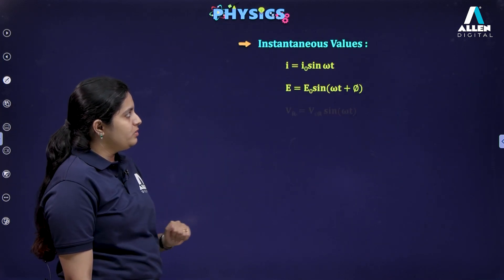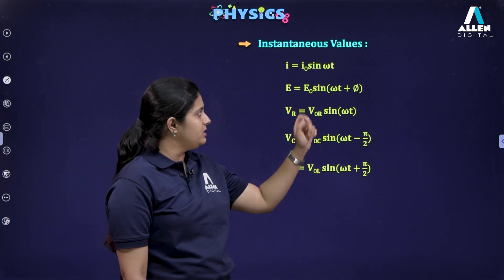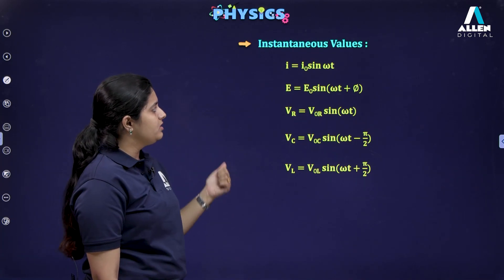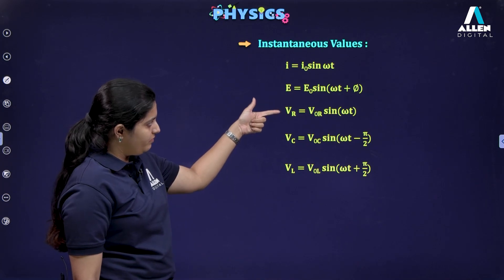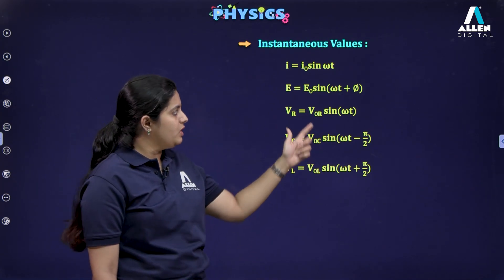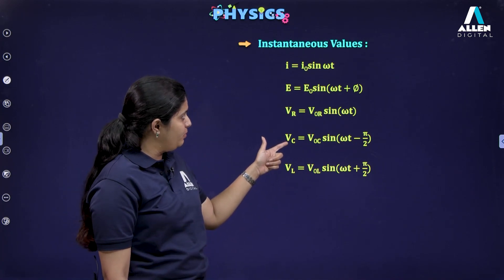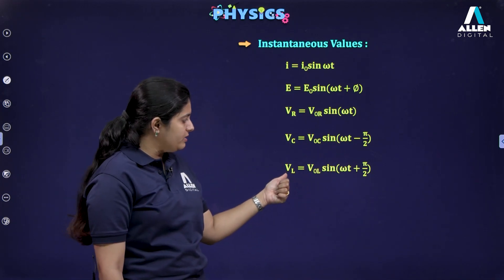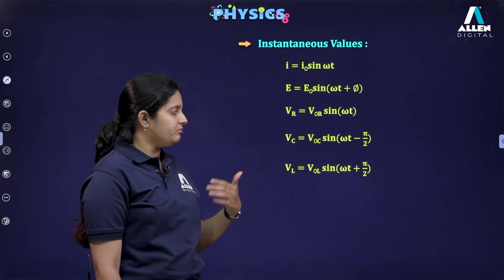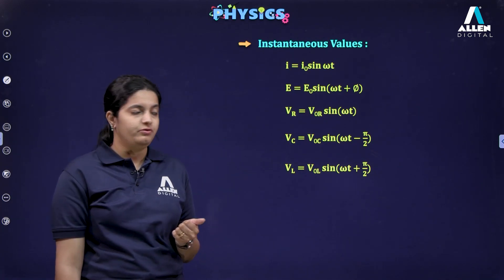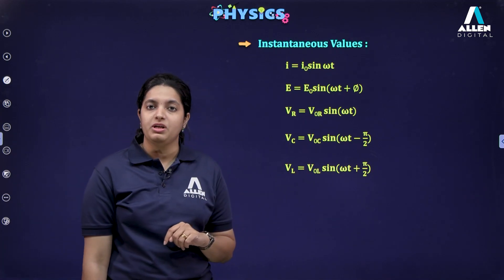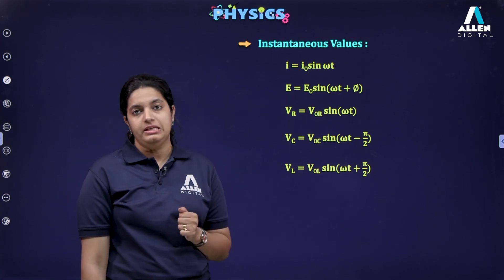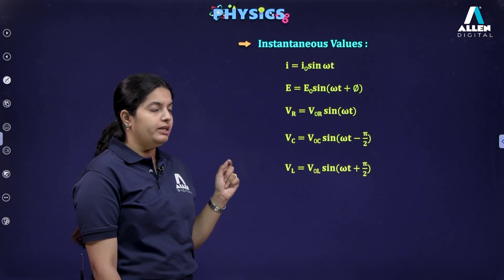For instantaneous values: current is i = i₀ sin(ωt). Since there is a phase difference φ between current and voltage, the general equation of applied voltage is e = e₀ sin(ωt + φ). For individual components: VR = V₀R sin(ωt) since there is no phase difference; VC = V₀C sin(ωt − π/2) since voltage lags current by π/2; VL = V₀L sin(ωt + π/2) since voltage leads current by π/2 across the inductor.